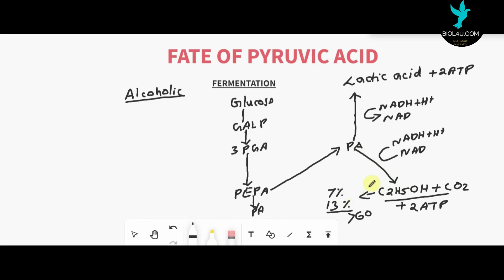To produce alcoholic beverages with more than 60 percent alcohol, the fermentation product must be subjected to distillation. Using a distillation process, the alcoholic percentage can be increased beyond 13 percent. Without distillation, the alcoholic percentage remains between 7 and 13 percent. So that is alcoholic fermentation and lactic acid fermentation — the two types of anaerobic fermentation representing the fate of pyruvic acid.